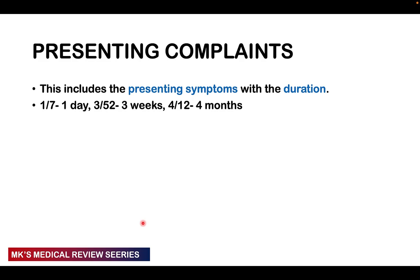Then come to the presenting complaints — the symptoms they're presenting with. Do not forget to add duration. Remember: 1/7 is 1 day, 2/7 is 2 days; weeks are over 52, so 3/52 is 3 weeks; months are over 12, so 4/12 is 4 months. Put the symptoms in chronological order.